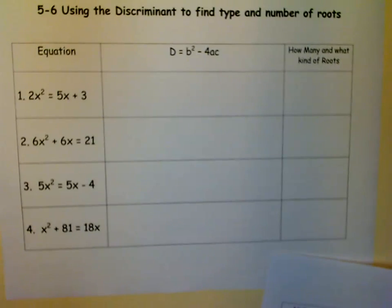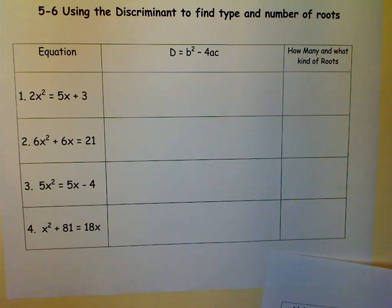Greetings, this is m squared, and we are going to find the discriminant of some quadratic equations and then use that to help us find out what kind of roots and how many roots a quadratic equation has.